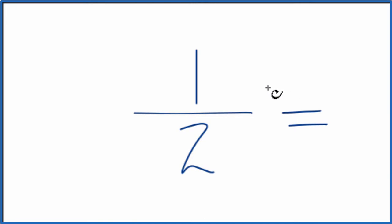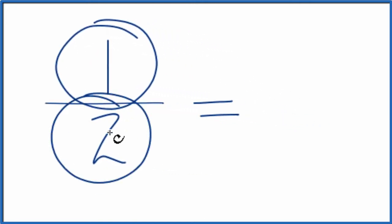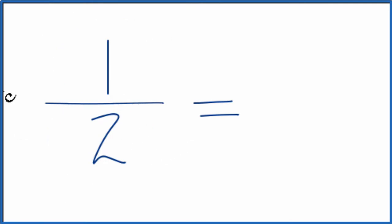To do that, what we need to do is find a common factor, something that goes into 1 and 2 evenly. So when I look at 1 half here, the only factor that goes into both 1 and 2 evenly is 1. So we divide the numerator by 1,